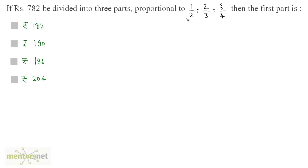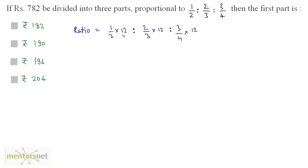Let us simplify the given ratio. We can take the LCM of the denominators, which is 12. So (1/2)×12 : (2/3)×12 : (3/4)×12. Remember, multiplying all terms in a ratio by a common factor does not change the value of the ratio. So 6:8:9 — this ratio is essentially 6:8:9.